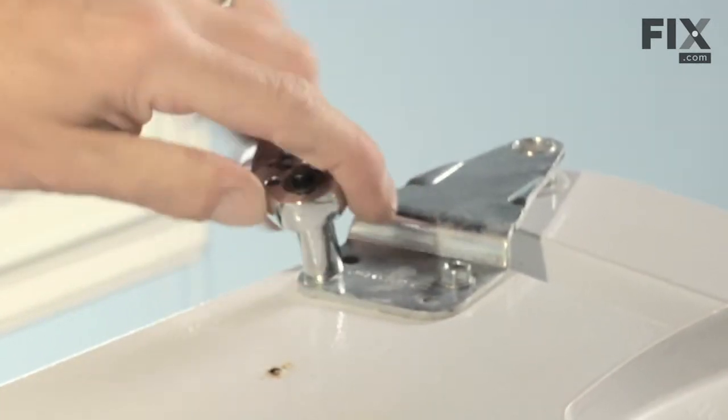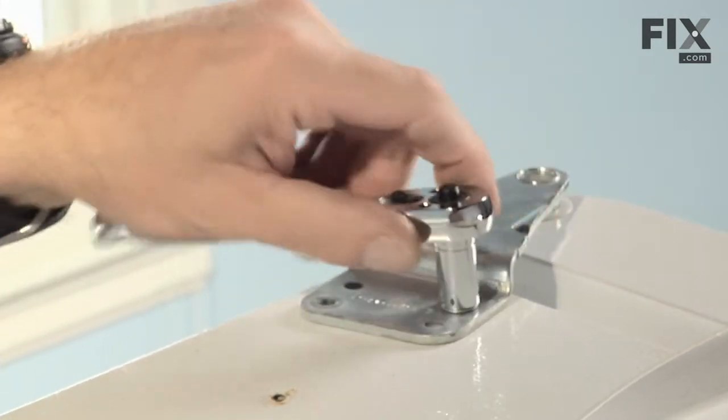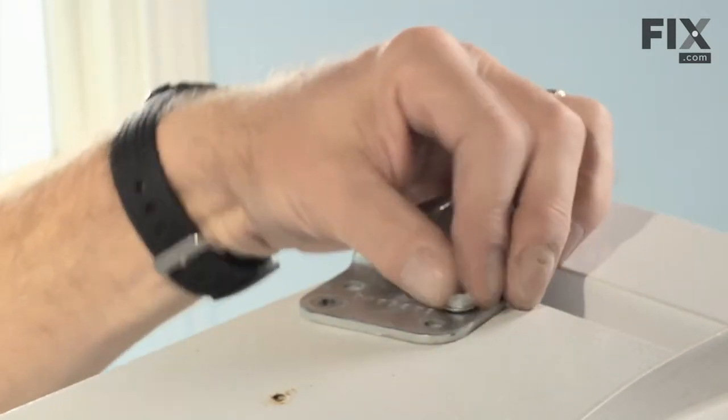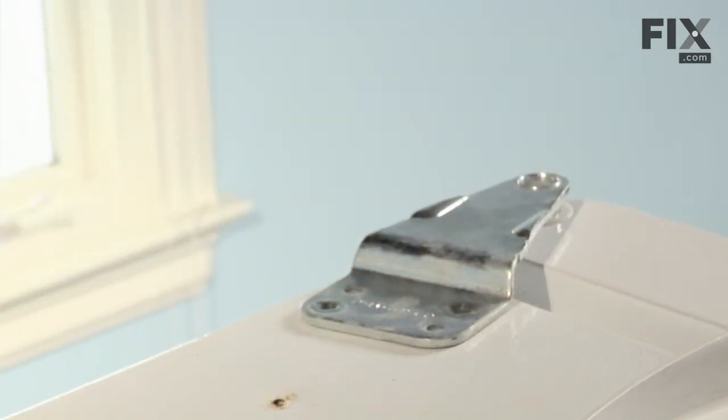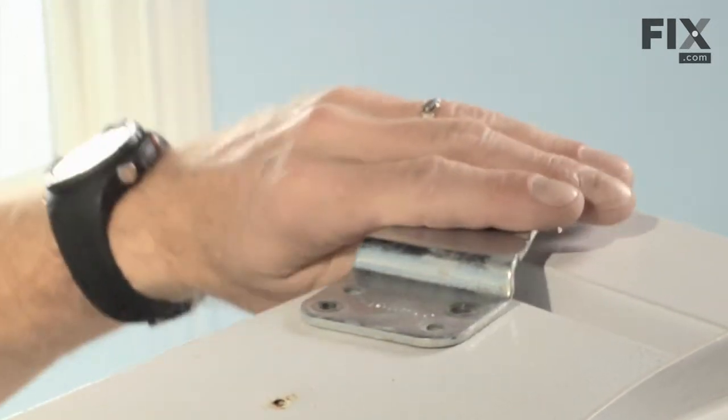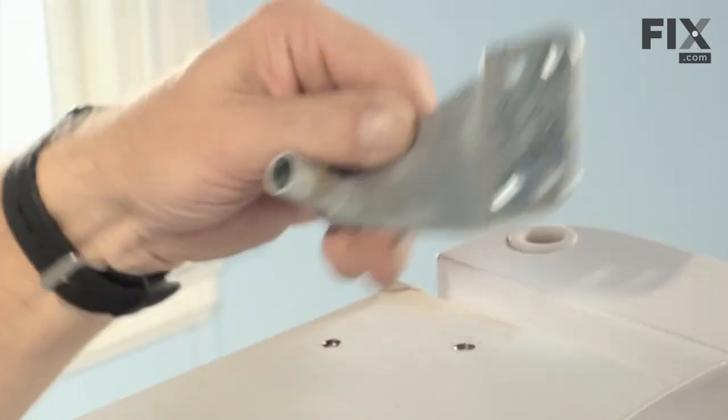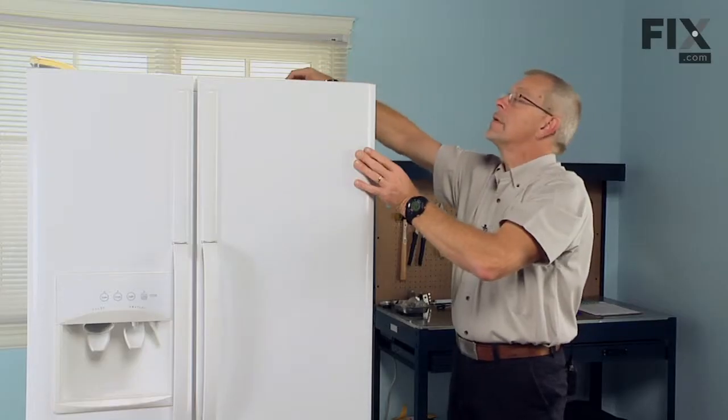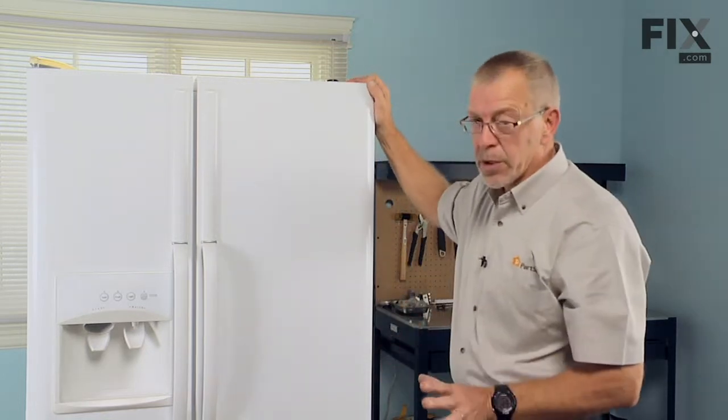Remove those two bolts, now just lift the hinge out of the door and now we're ready to take the door off and put it on a flat surface where we can work on it.